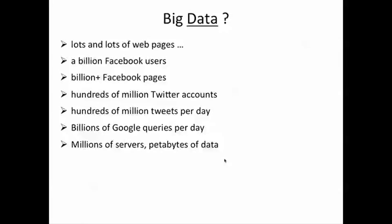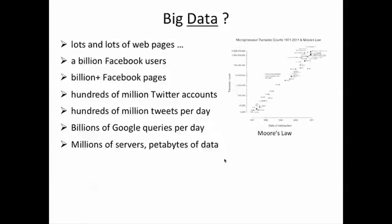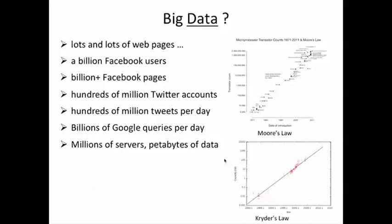And clearly, driving this explosion is Moore's law, where computing power doubles every 18 months, and Crider's law, which is that disk capacity is growing even faster than Moore's law.